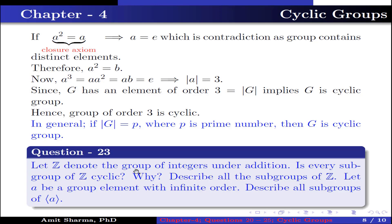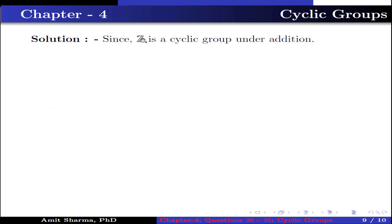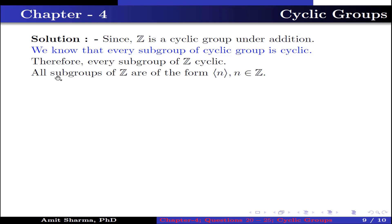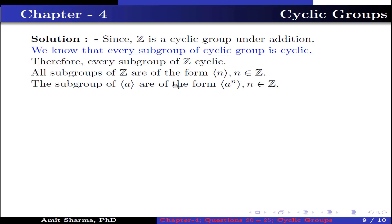Question number 23: let Z denote the group of integers under addition. Is every subgroup of Z cyclic? Since Z is a cyclic group under addition, and every subgroup of a cyclic group is cyclic, every subgroup of Z is cyclic. All the subgroups of Z are of the form generated by n, where n belongs to Z. The subgroups generated by A are of the form generated by A to the power n, where n belongs to Z.